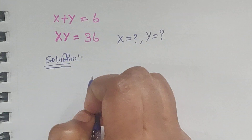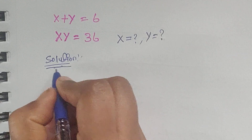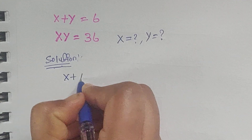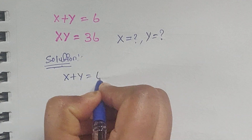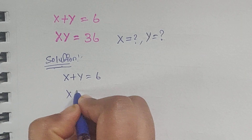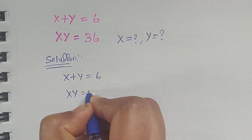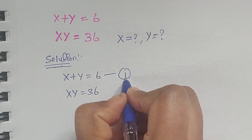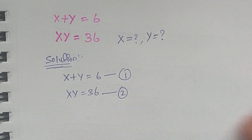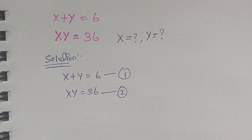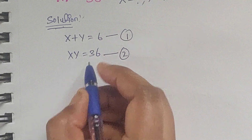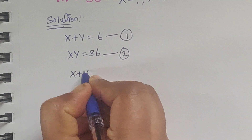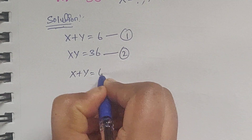So how do you solve this problem? Let's see. So x plus y equals 6 and x times y equals 36. Let us consider this is equation 1 and this is equation 2. So from equation 1, we can write: